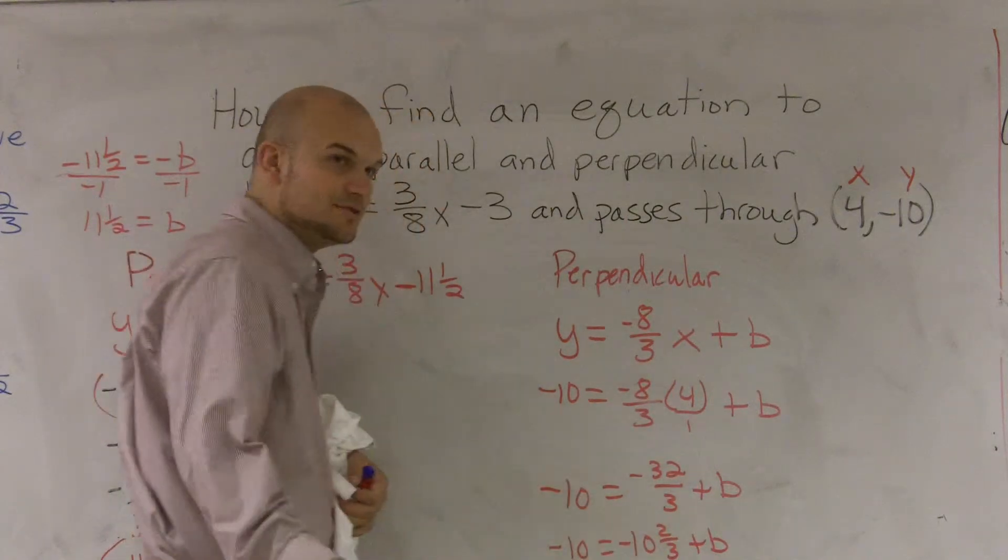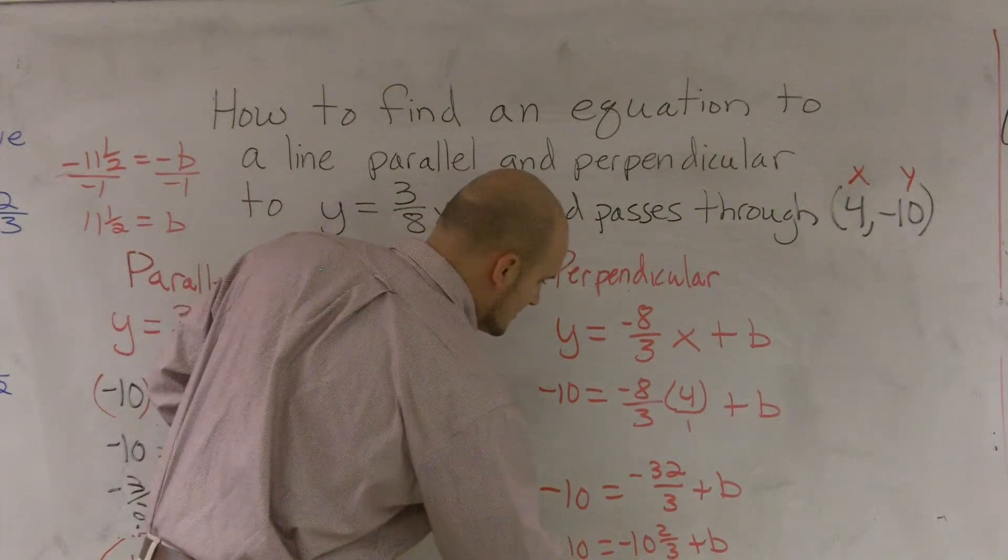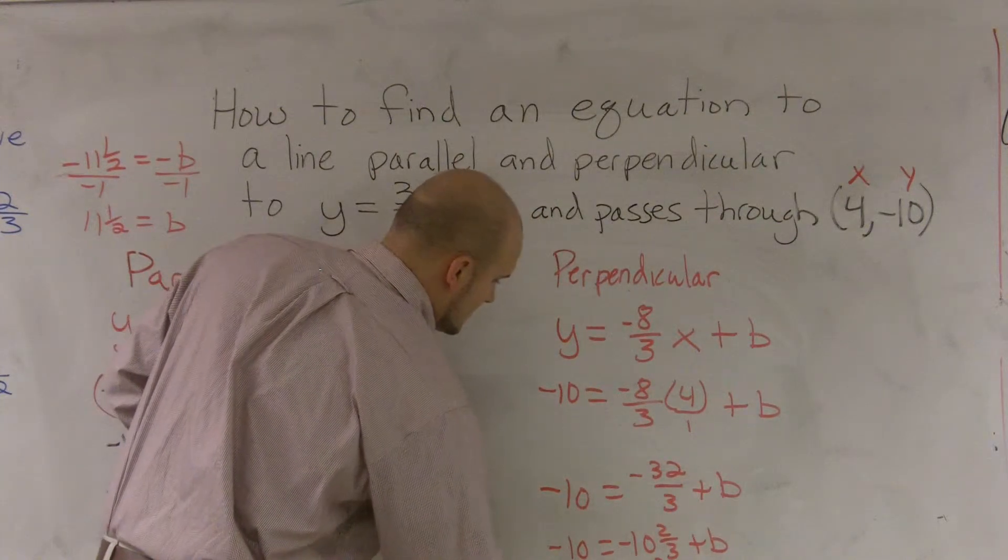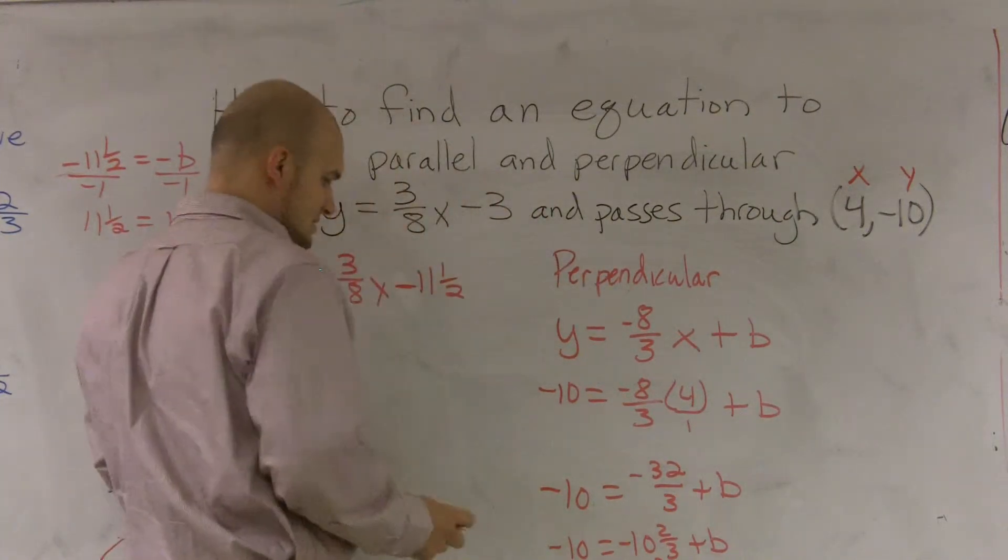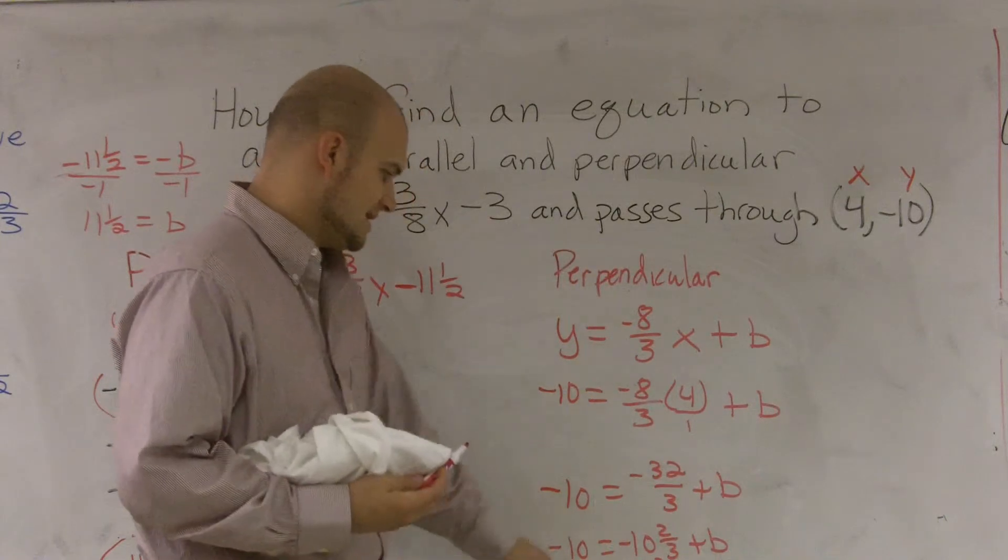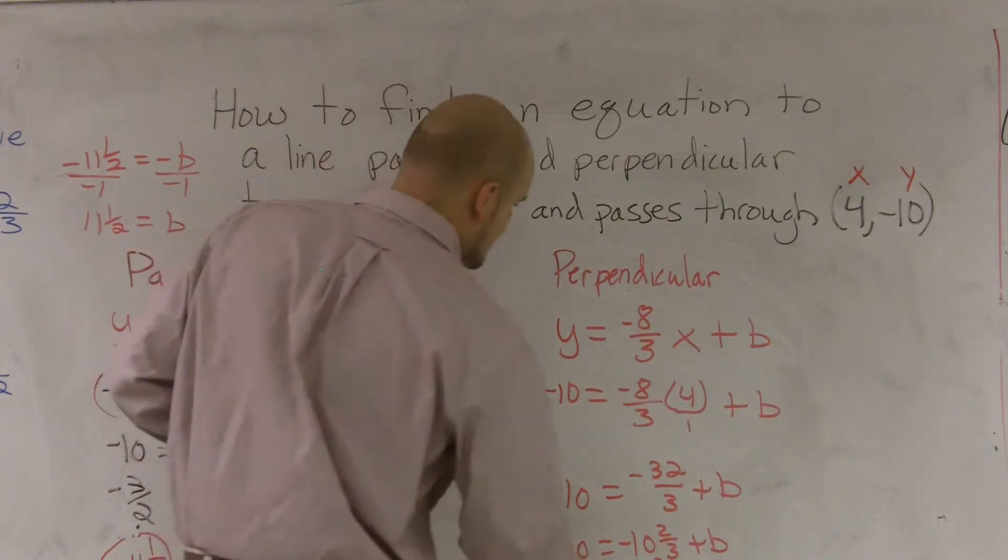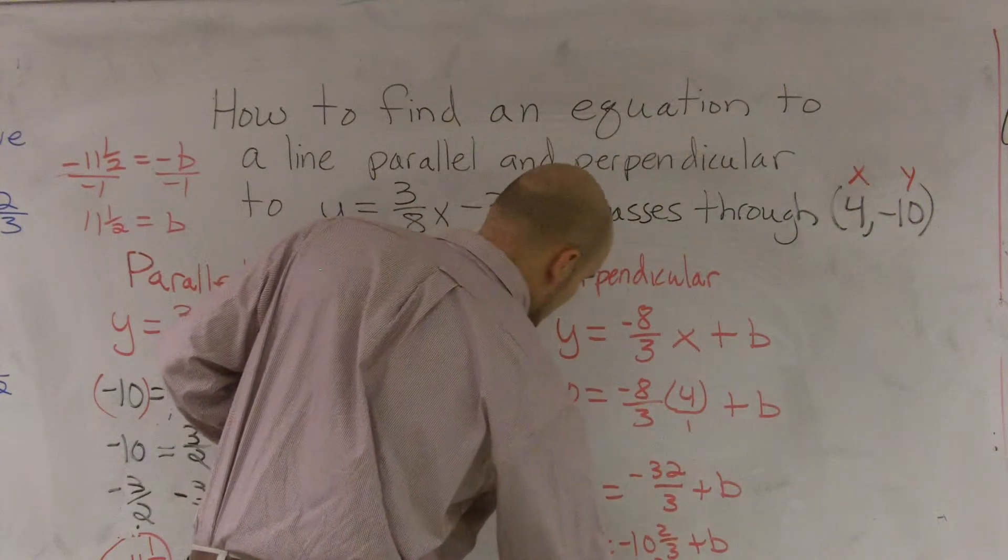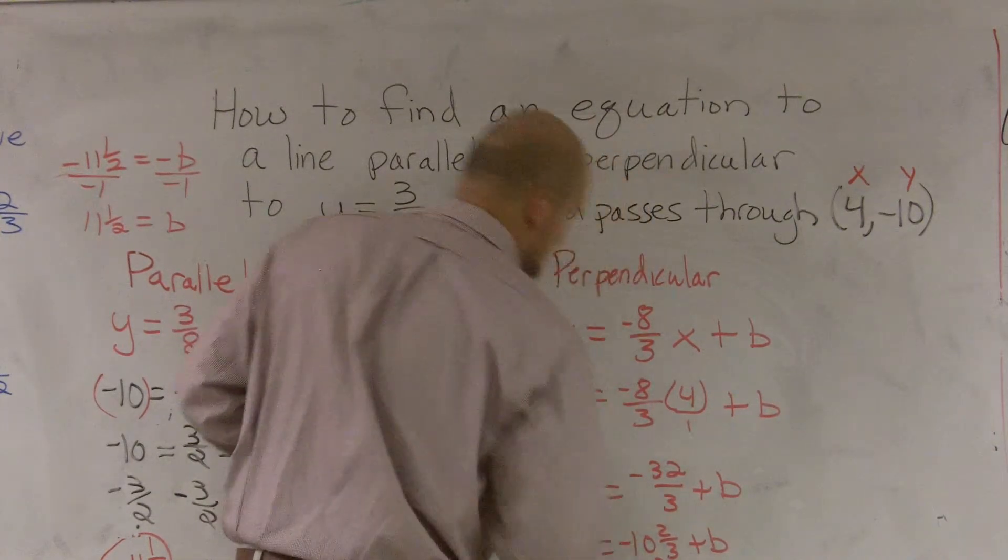Then I'm going to add 10 and 2/3 to both sides. And what you notice is these two are going to cancel out and I'm left with 2/3. So my b equals 2/3.